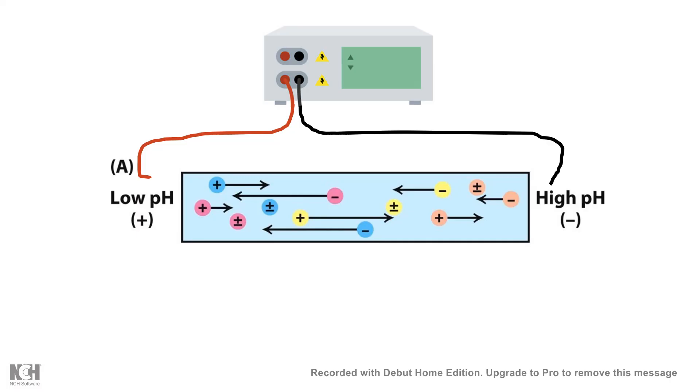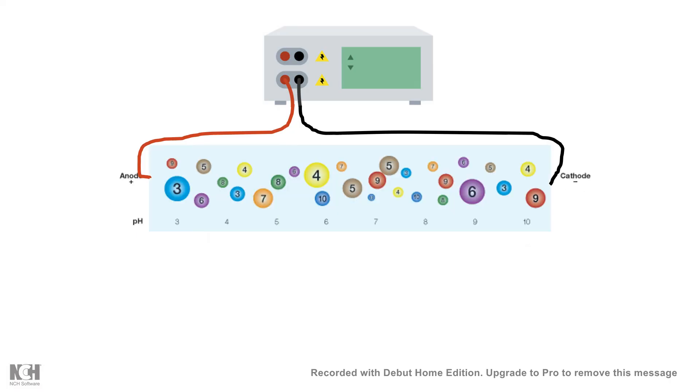Once we run this gel, several proteins—as you can see on the screen, the pink ones, the blue ones, and the yellow ones—which have several different types of charge, would move and ultimately concentrate in the format of a band. What we have in the beginning are several types of proteins of several sizes and several charges.